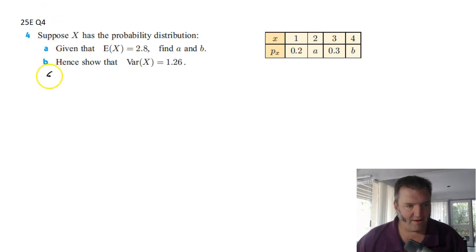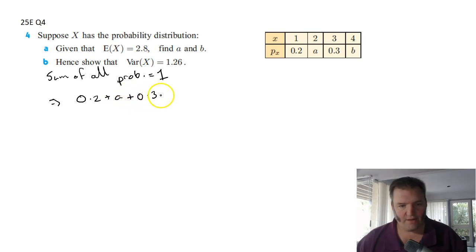So let's go with that: sum of all probabilities equals 1. What does that mean in this case? It means we've got 0.2 plus a plus 0.3 plus b. They're the probabilities of each of the possible outcomes. They have to add together to equal 1. So I've got a plus b equals 0.5, or a half. Doesn't matter how you write it.